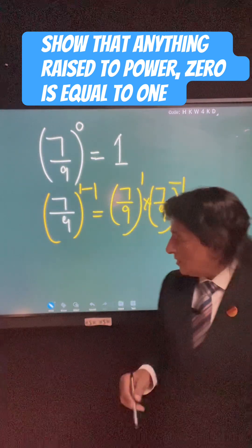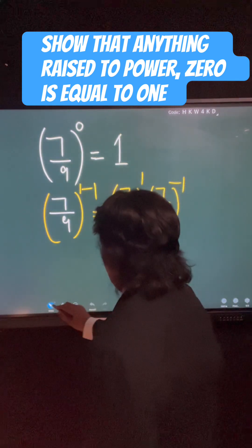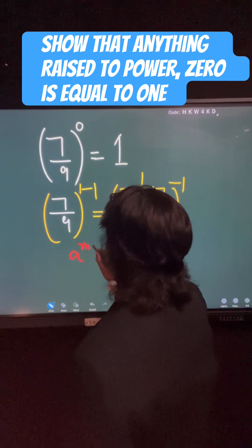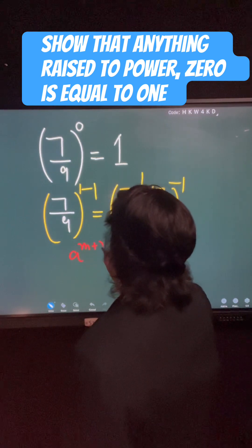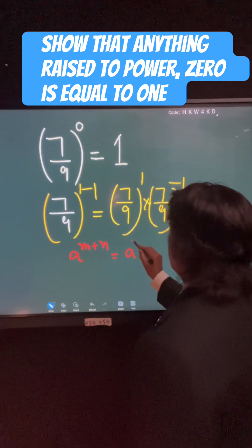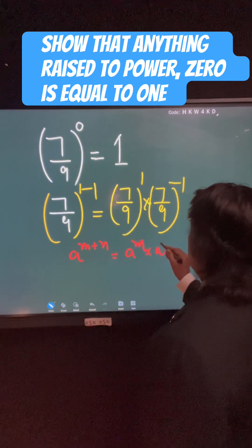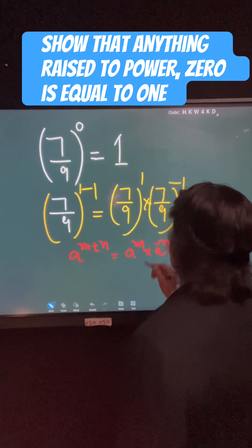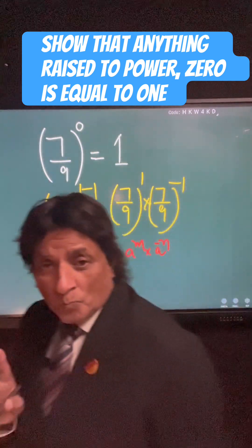Now we are using this result: a to the power m plus n equals a to the power m times a to the power n. Here n is minus. Perfect.